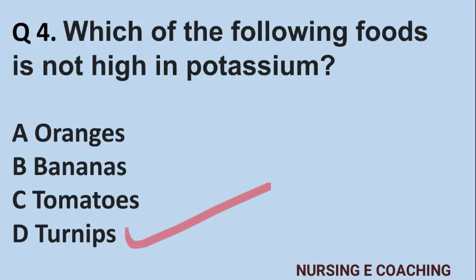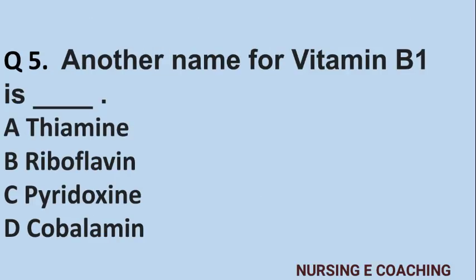Question number 4: Which of the following food is not high in potassium? A) Orange, B) Bananas, C) Tomatoes, D) Turnips. Answer is D) Turnips.